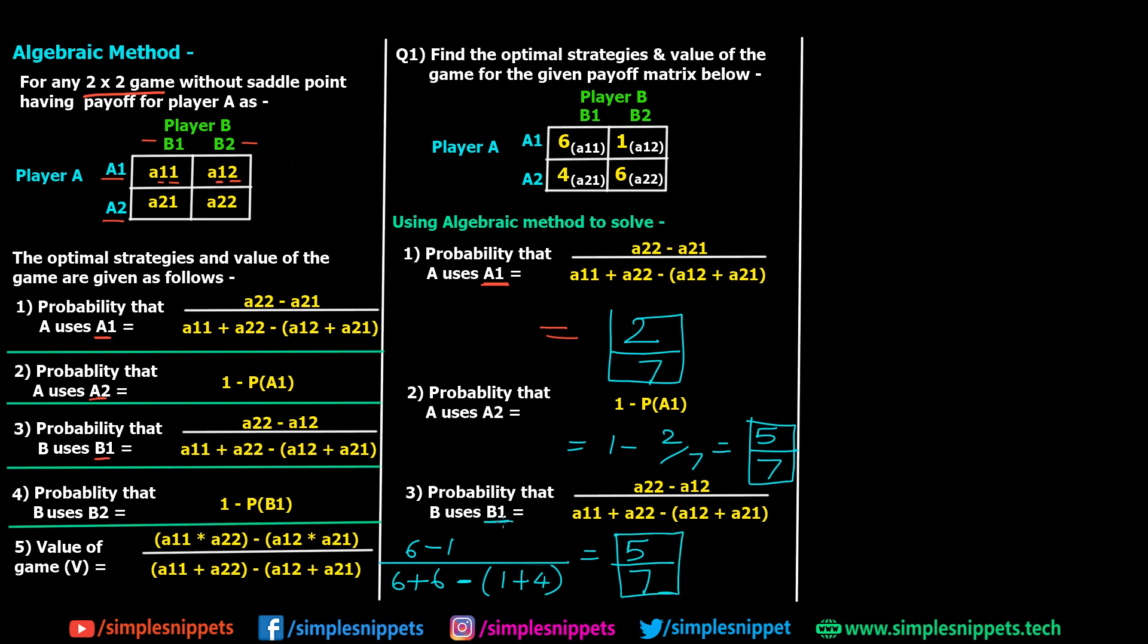Similarly, probability that B uses B2 is going to be 1 minus 5 by 7. That's what we have in the formula. So it's going to be 1 minus 5 by 7, which is going to be 2 by 7. So we've calculated all the individual probabilities for player A using A1 and A2, and then B1 and B2.